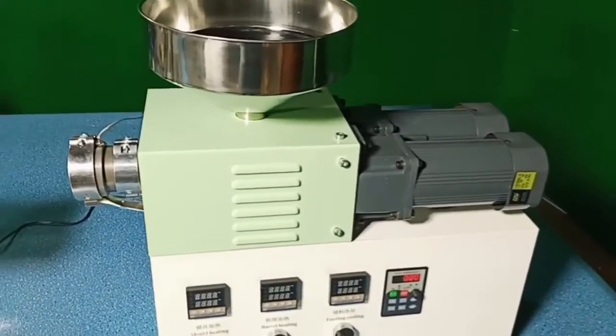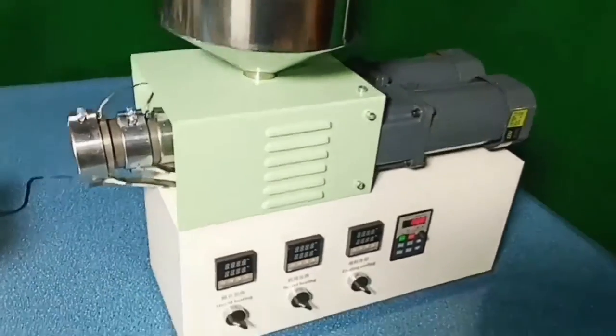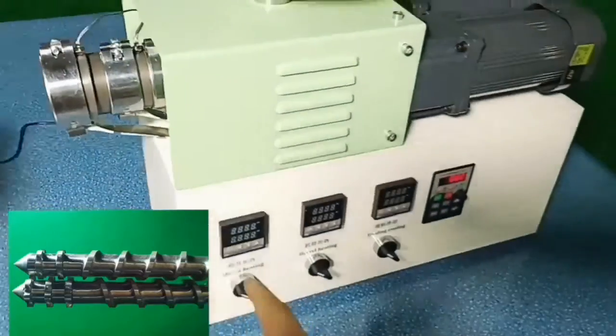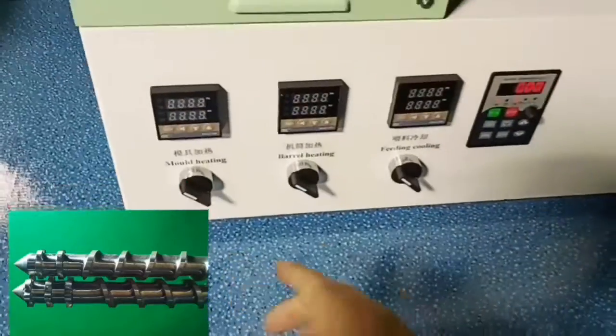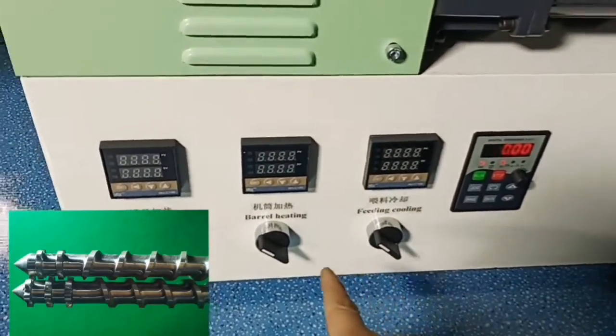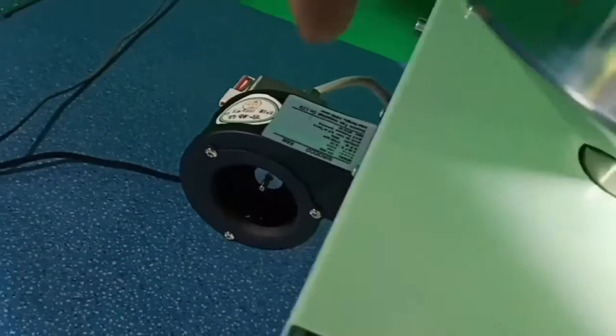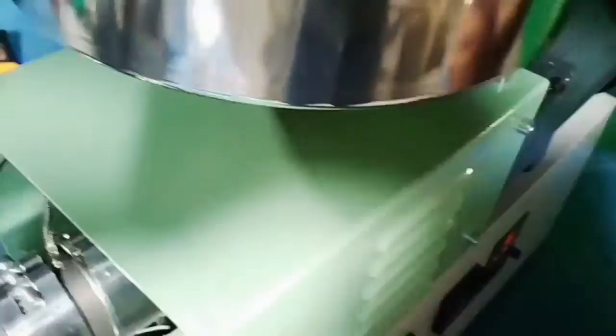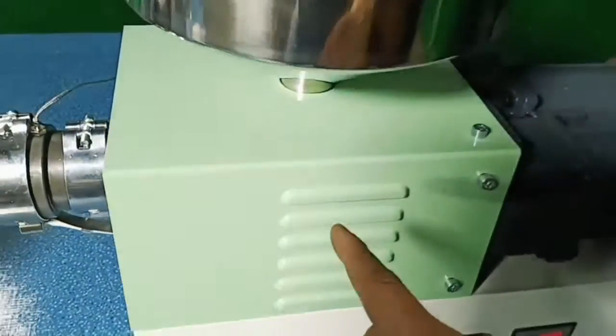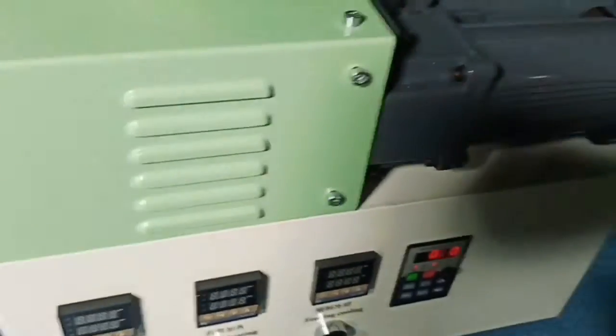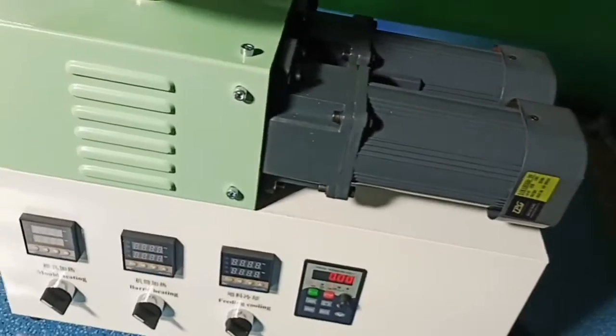This desktop twin screw extruder has three heating zones: one for feed cooling, others for screw and mold heating. The fan starts working when the feeding zone temperature is high; it keeps the feeding zone at low temperature.